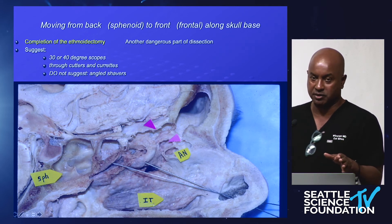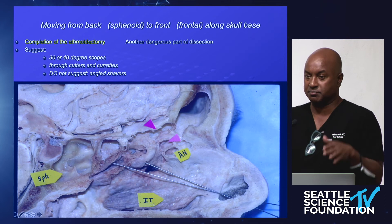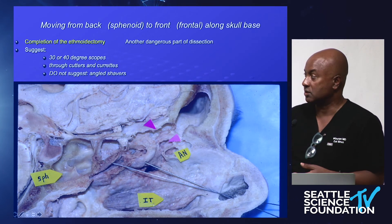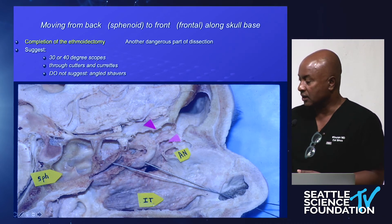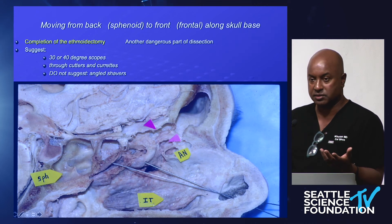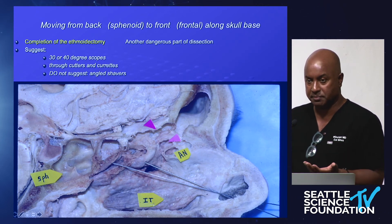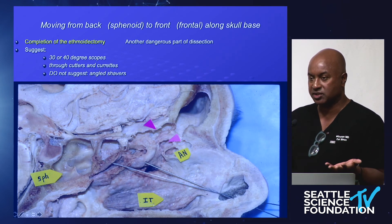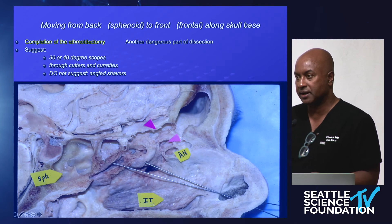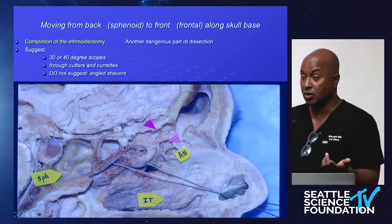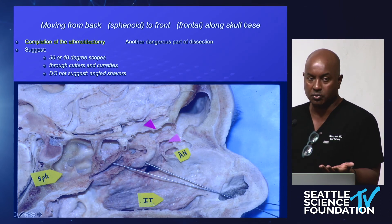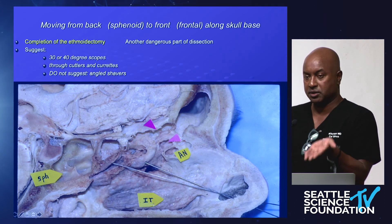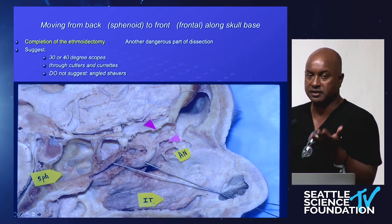Now you've got the medial orbital wall visible, the anterior face of the sphenoid identified, and your posterior-to-anterior dissection field is clean. Complete the dissection of the medial orbital wall if it's still oozing — using a shaver or through-cutting device parallel to the medial orbital wall, not pointing toward it. The posterior-to-anterior dissection involves identifying branches of the posterior ethmoid artery, the shape of the skull base, and the anterior ethmoid artery — all three having associations with the medial orbital wall. Then enter the agger nasi region and begin your frontal recess dissection.